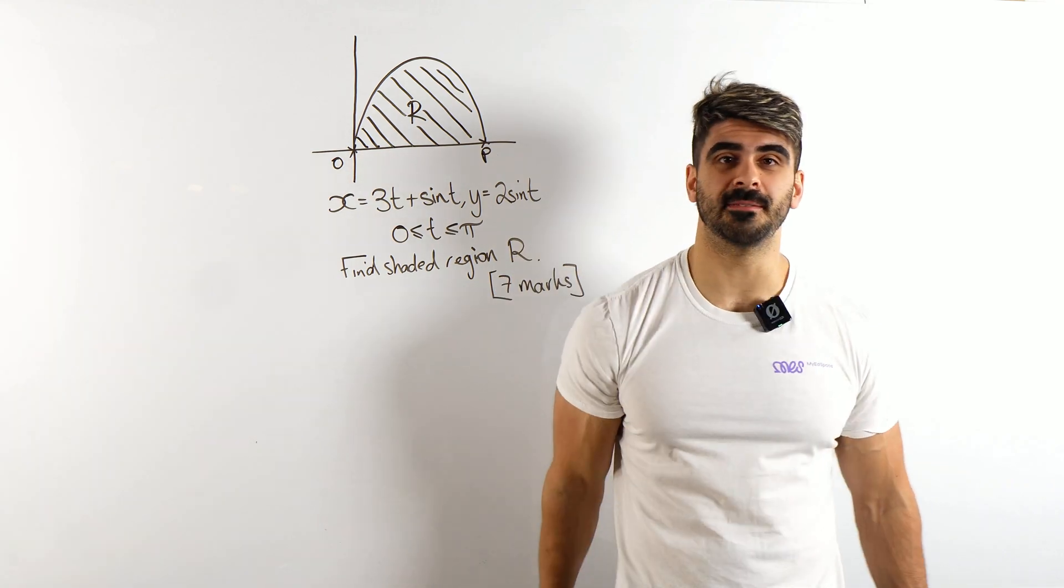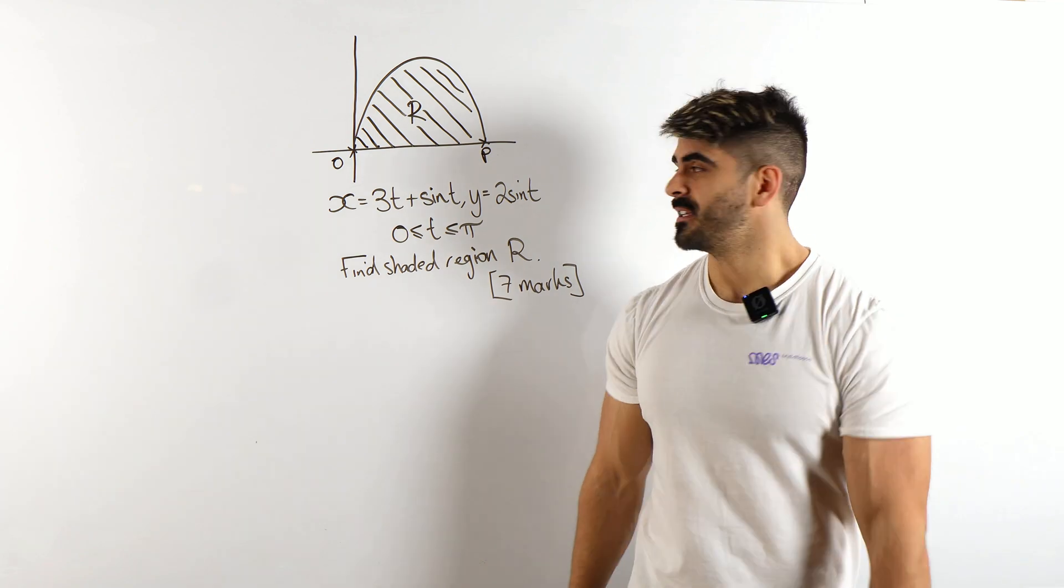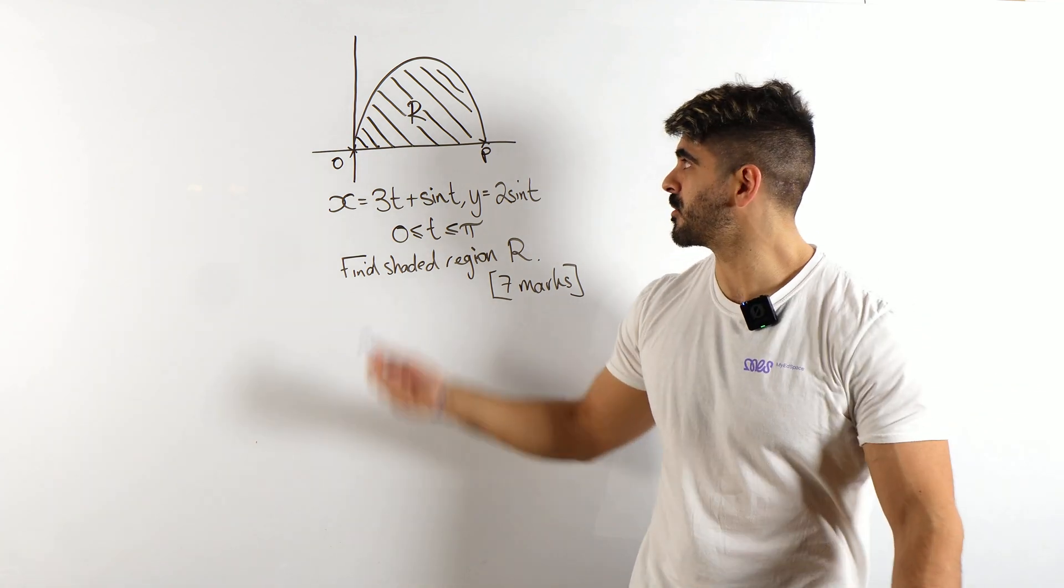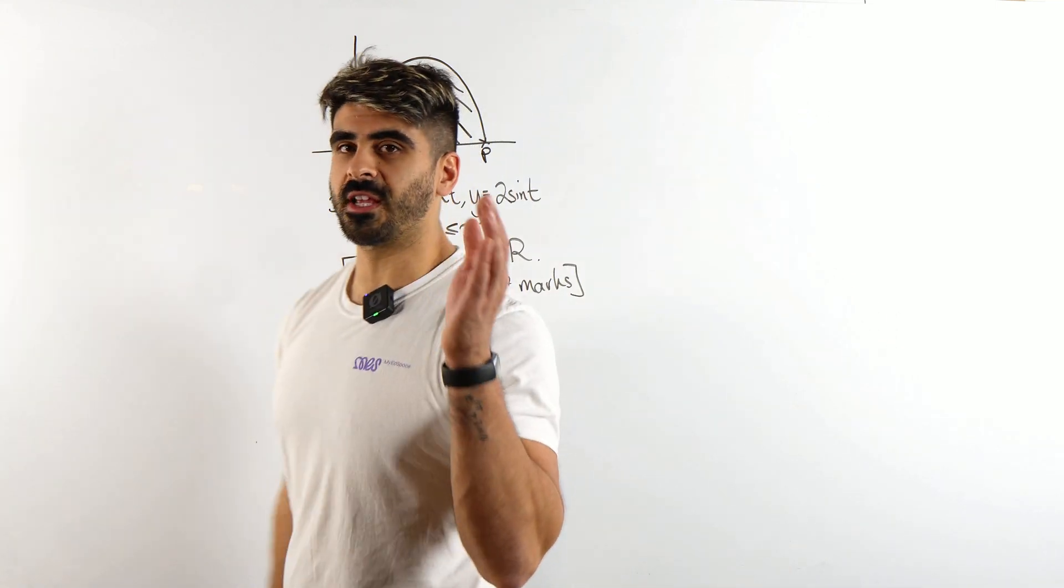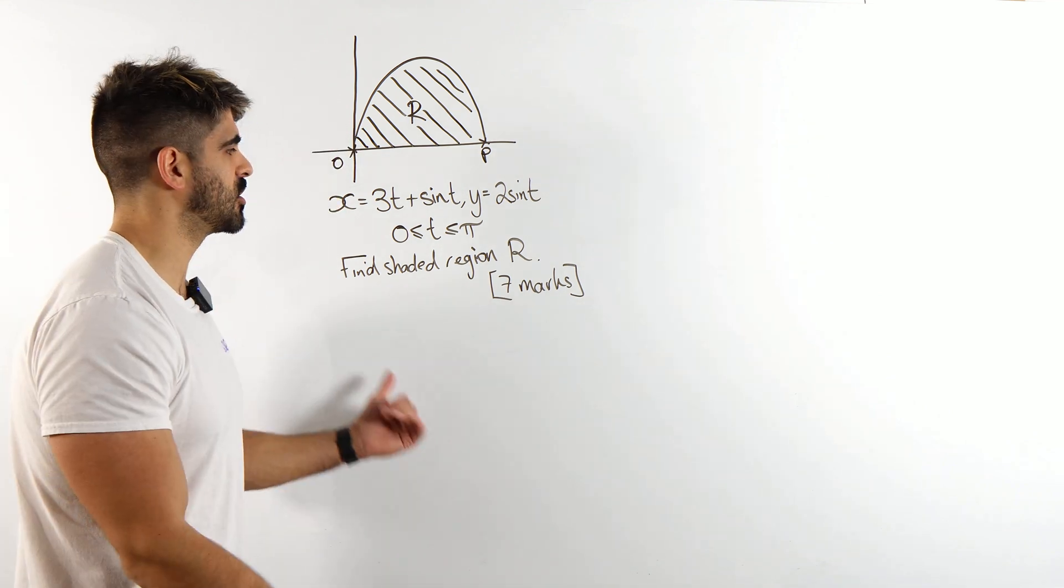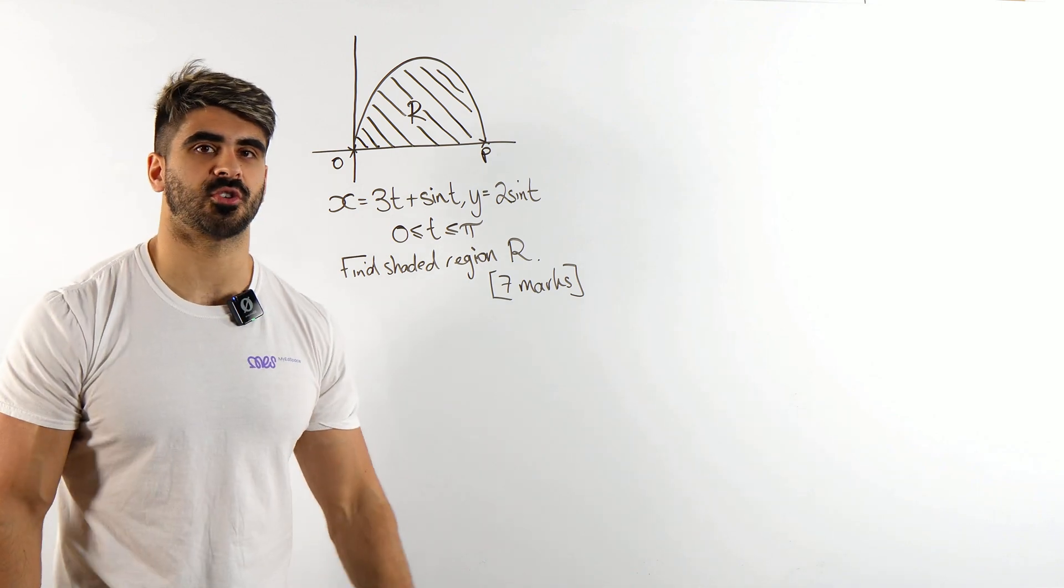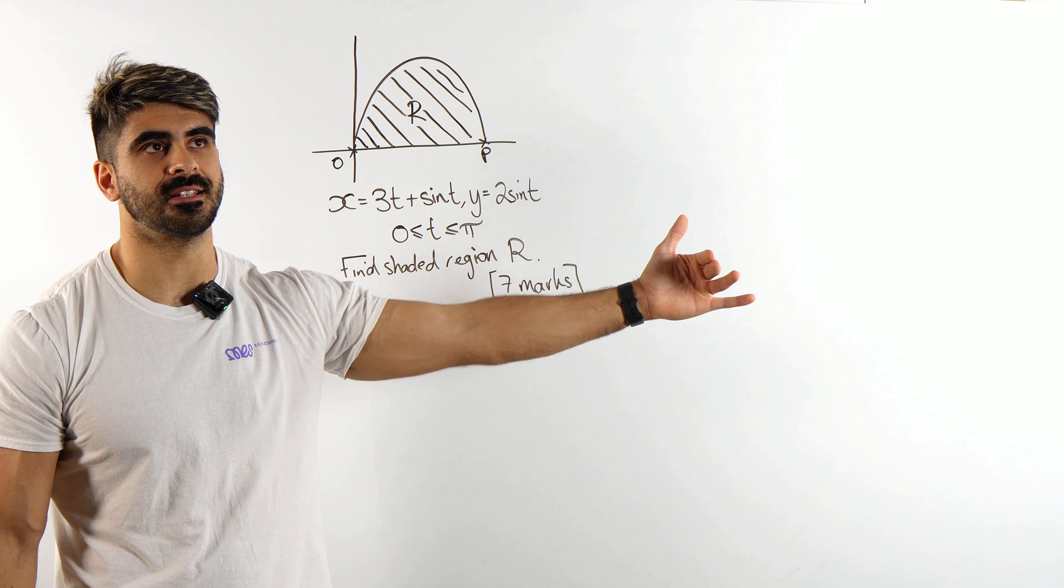Seven Marky Marks, Parametric Integration. Let's just get straight to it, yeah? So we want to find this area R, how do we do it?